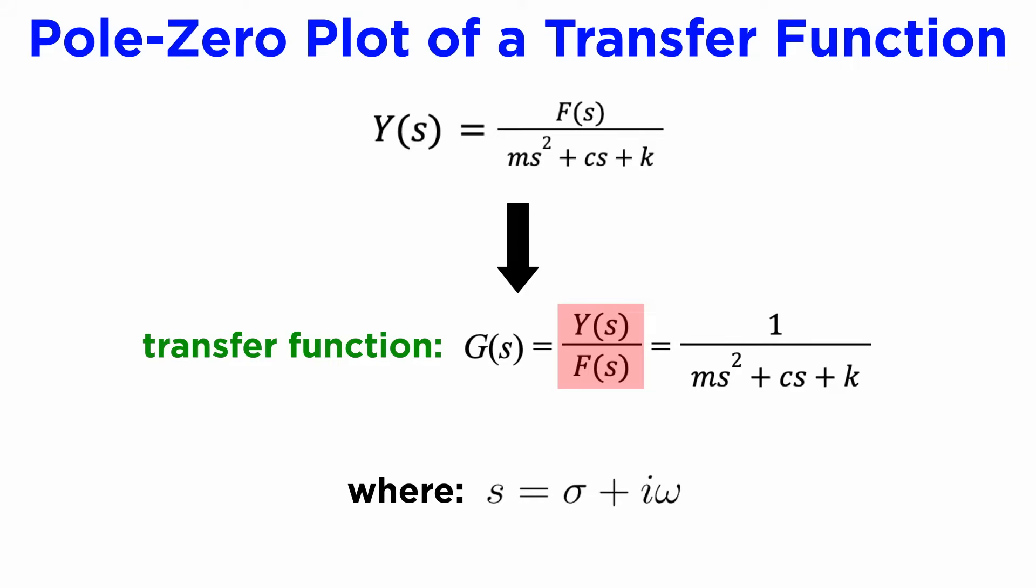This function, the ratio of a system's output y to its input f, in the s domain, is called the transfer function of the system, written capital G(s), which in our case is the function 1 over ms² + cs + k.